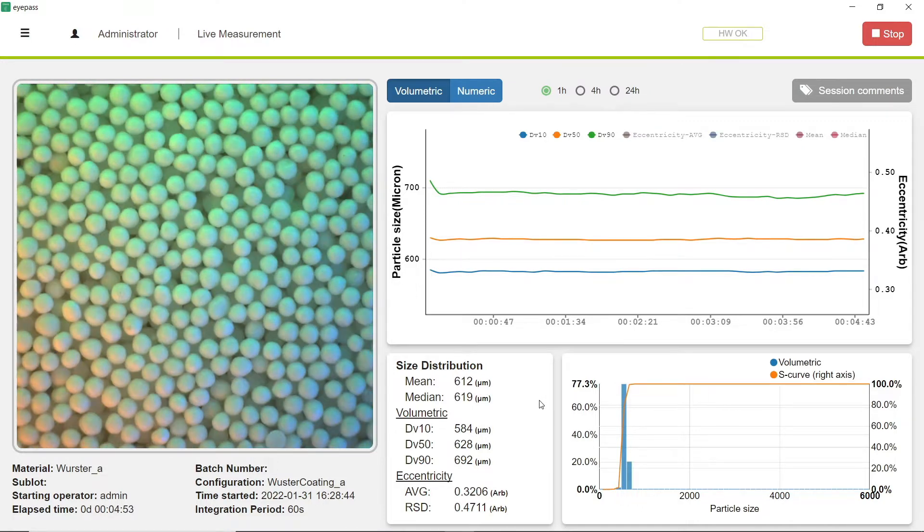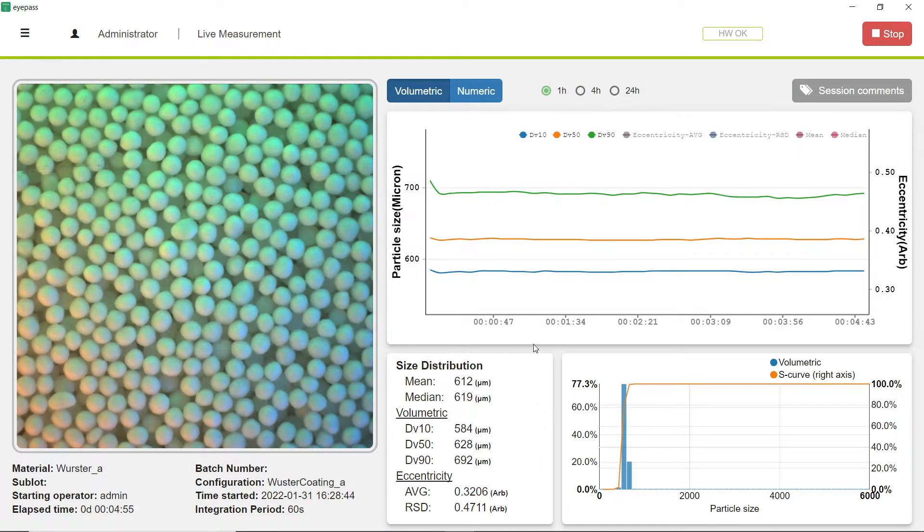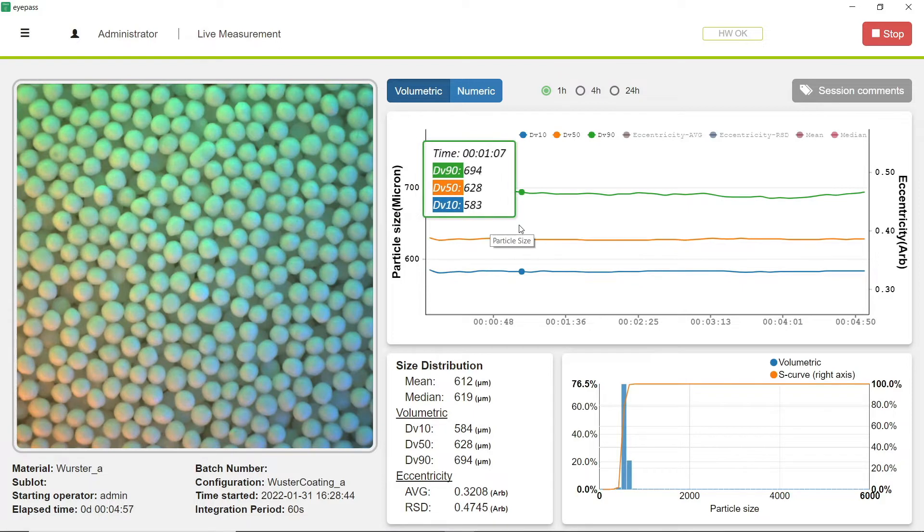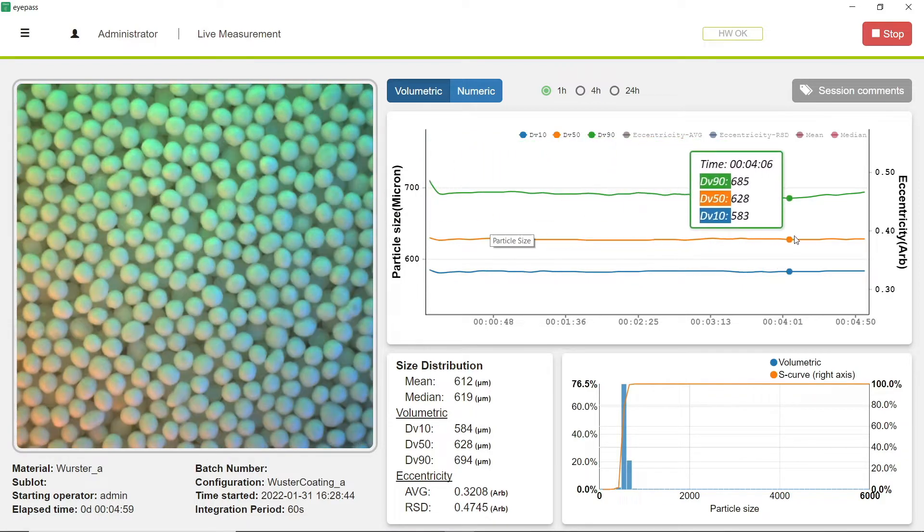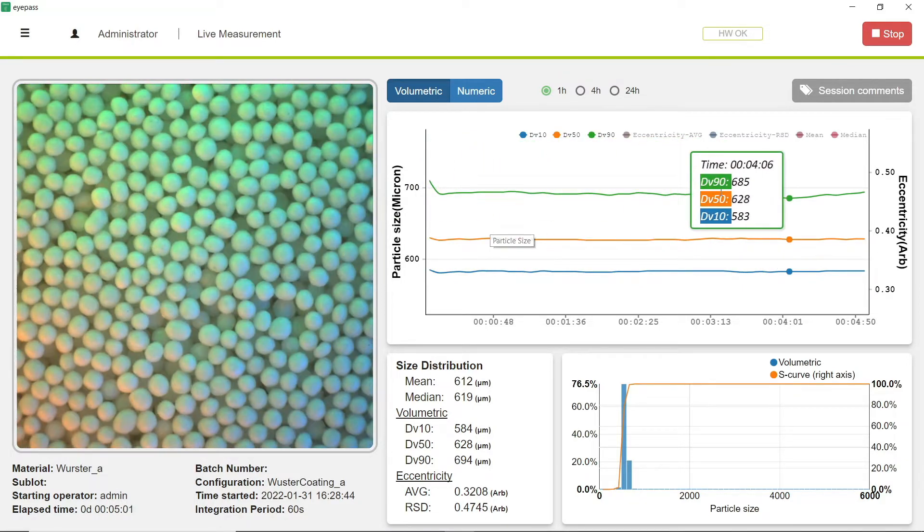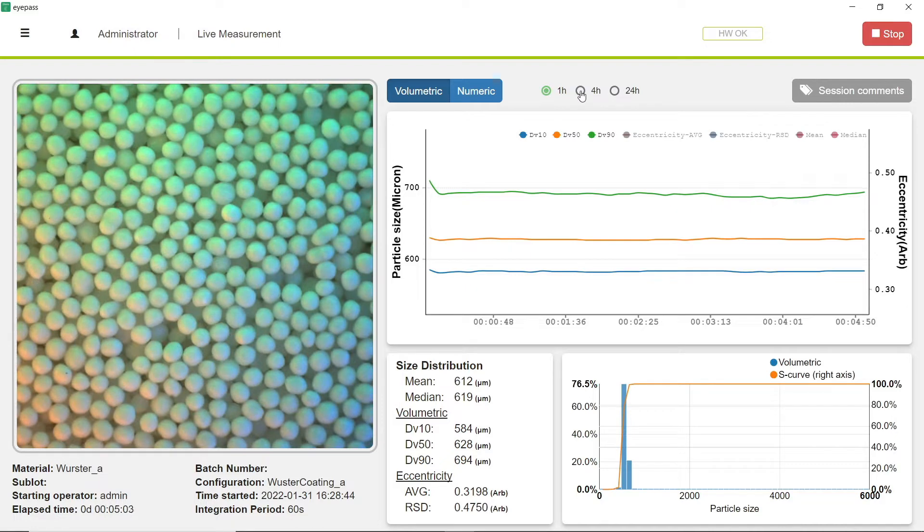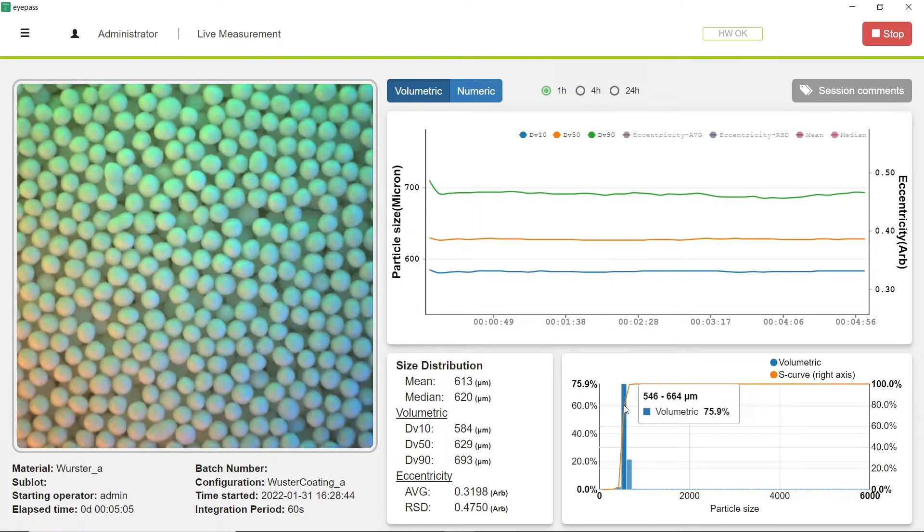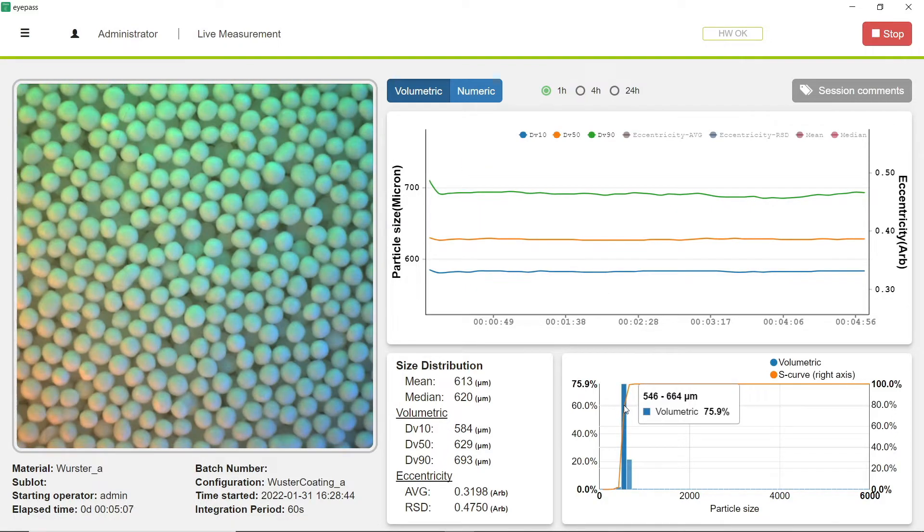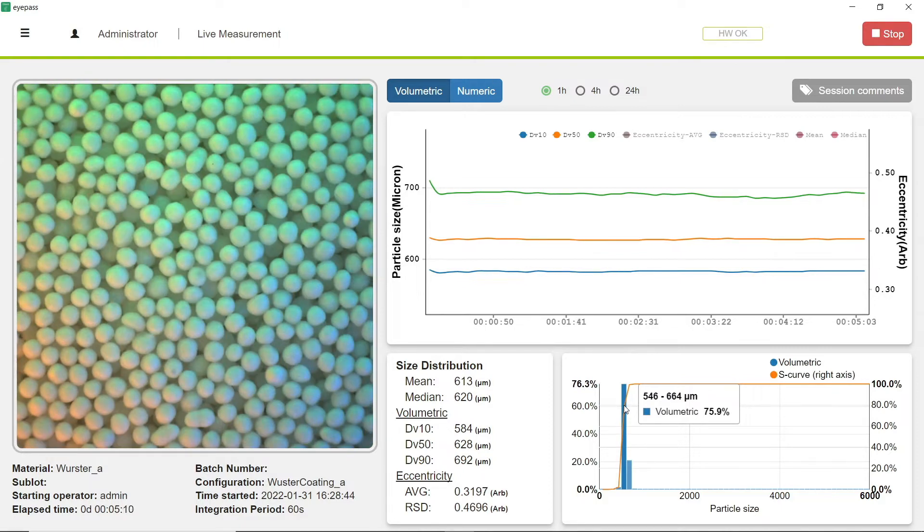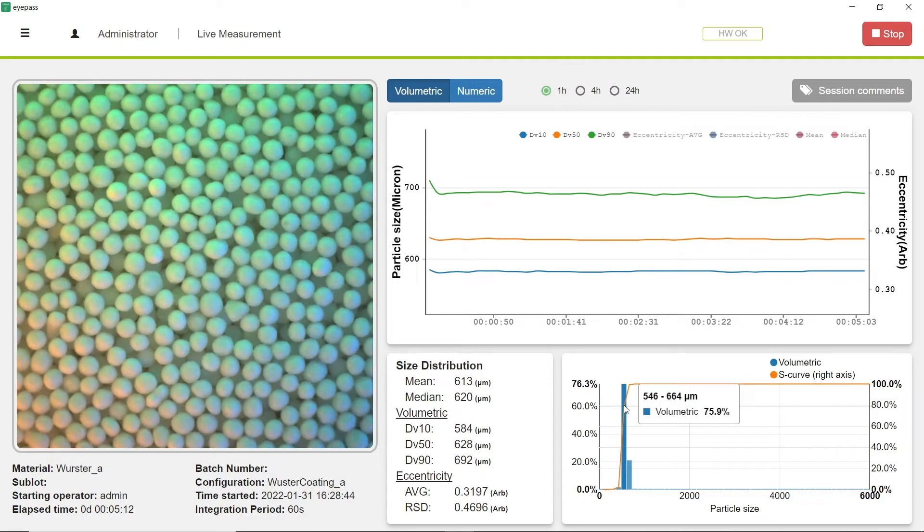We can also hover over these charts here to get more information about what's happening in our process inline, and we can zoom in and out of that data. We have the histograms here on the bottom which we can hover over to tell us what kind of brackets the material is falling into, so we can say that 75% of the material we've measured is falling between 546 and 664 microns.